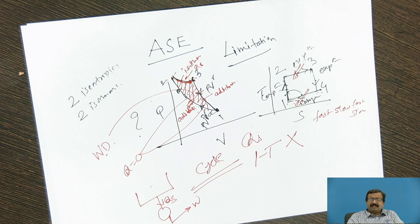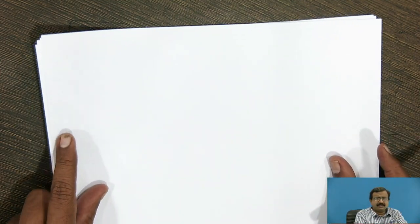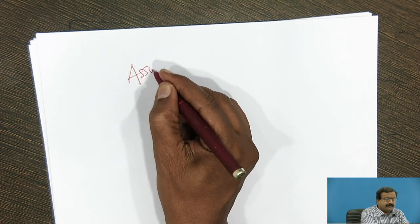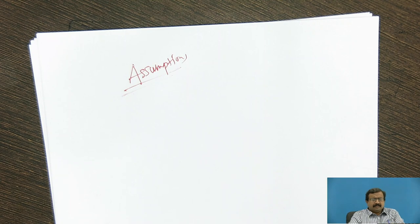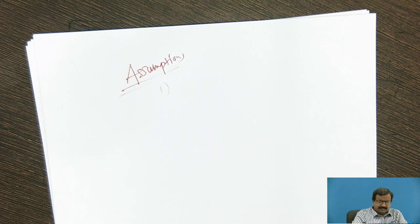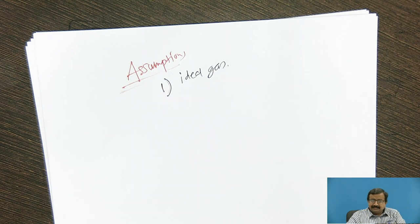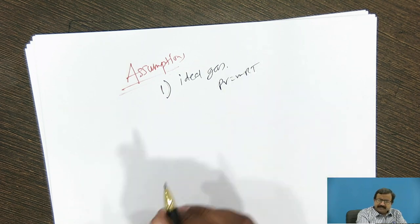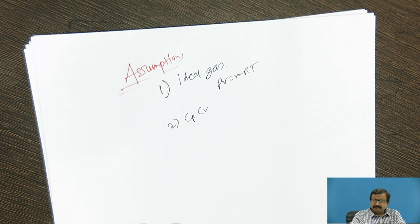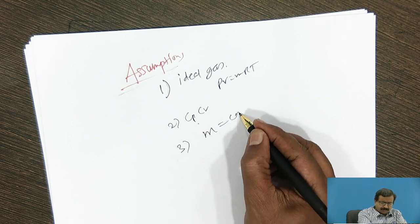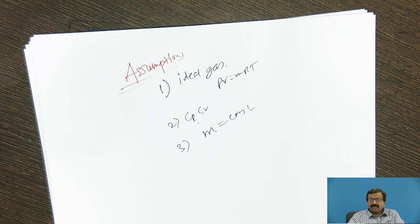So what is the air standard cycle? In the air standard cycle, we assume that air is the working medium. The important assumptions are: first, the working fluid is an ideal gas that obeys PV = mRT; second, CP and CV are constant; and third, mass is conserved — M equals constant. With these three basic assumptions, we proceed with the analysis of cycles.